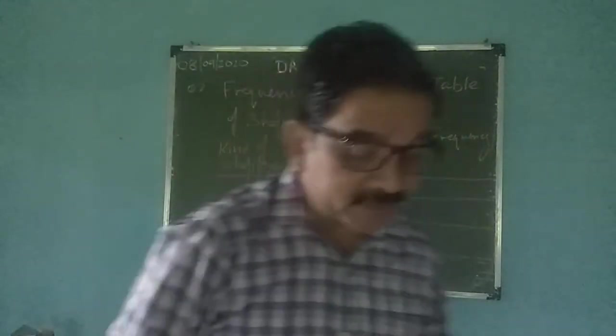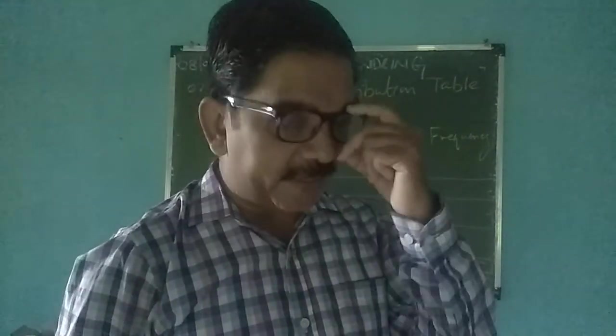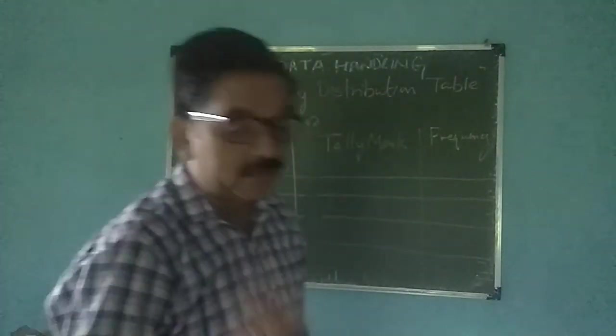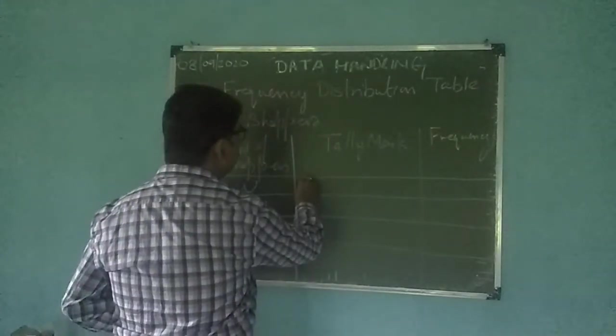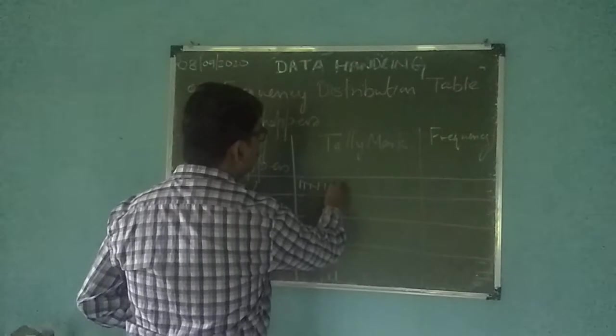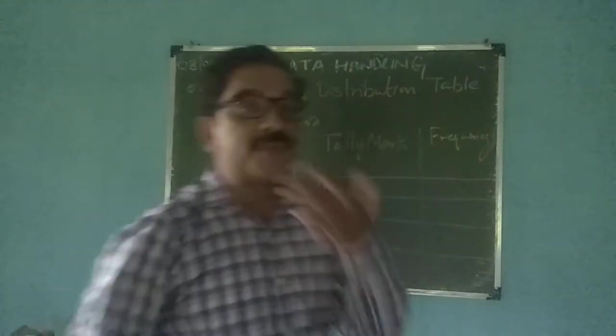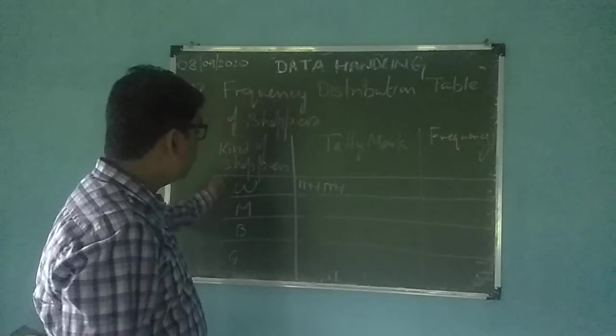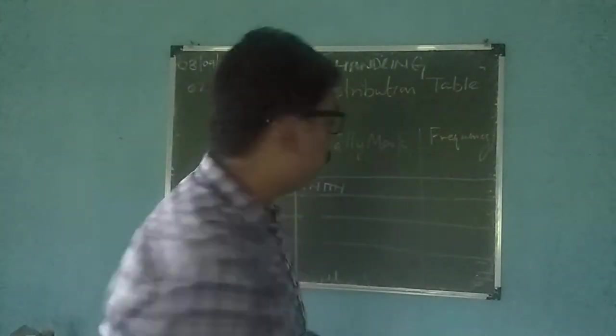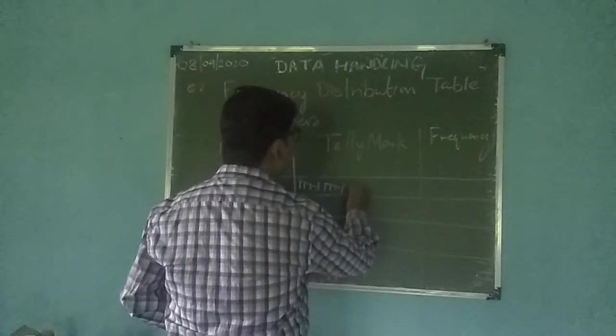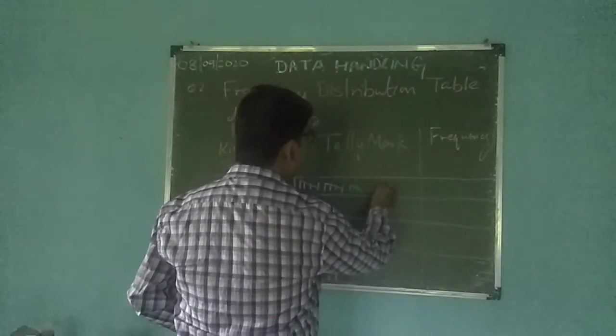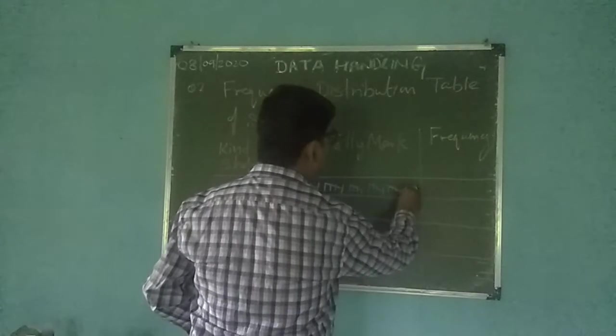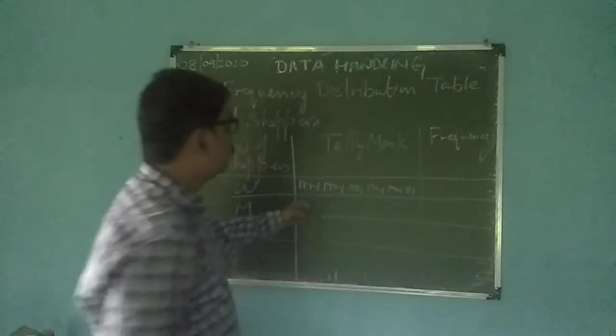Now how many W's are there? There are 28 W's. So what we will do, we will start tallying this. The first W, like one, two, three, four, five. Again one, two, three, four, five. For every fifth shopper we'll give a cut. Remember I'm just talking about W. It only belongs to W, the shopper W. So this is five, five, five, ten. Again one, two, three, four, five. One, two, three, four, five. One, two, three, four, five, six, seven, eight. Again five. One, two, three, four. One, two, three.